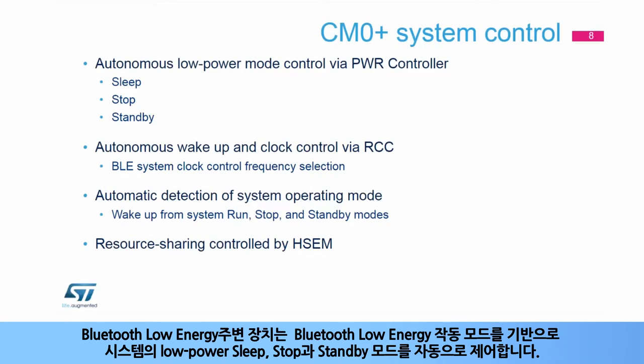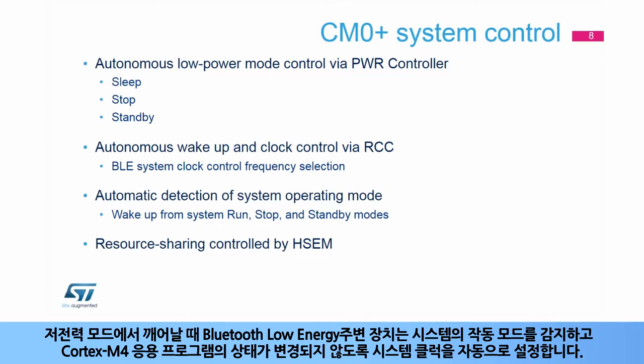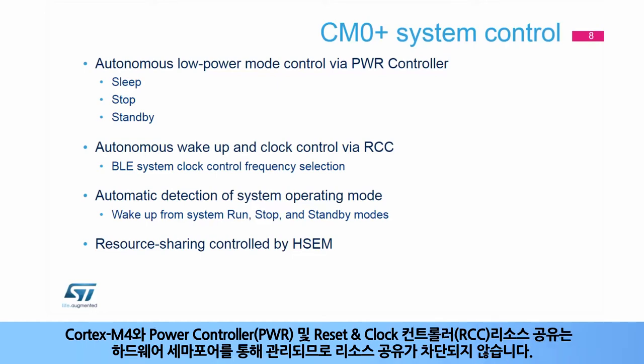The Bluetooth Low Energy peripheral autonomously controls the system's low-power sleep, stop, and standby modes based on the BLE operating modes. When waking up from low-power modes, the BLE peripheral detects the system's operating mode and autonomously configures its system clock to ensure the application Cortex-M4 state remains unchanged. The sharing of the power controller and reset and clock controller resources with the Cortex-M4 is managed with hardware semaphores, preventing any blocking of resource sharing.